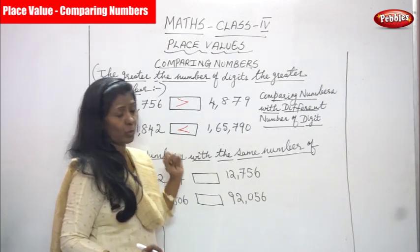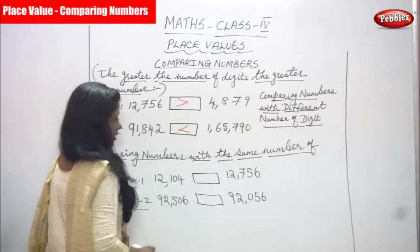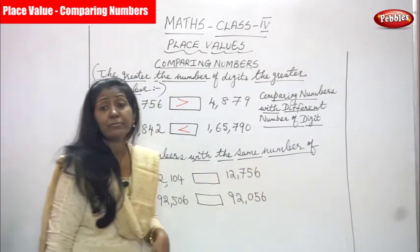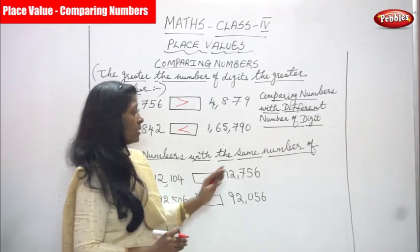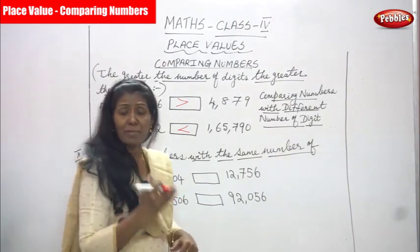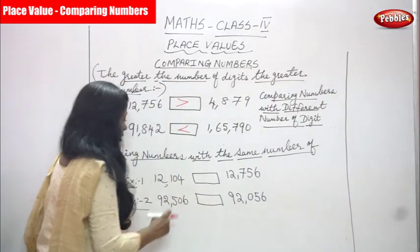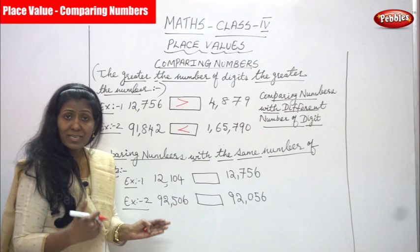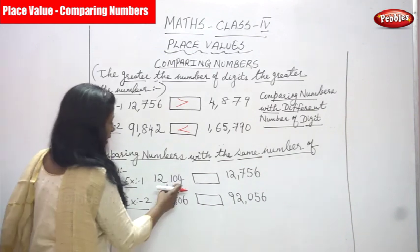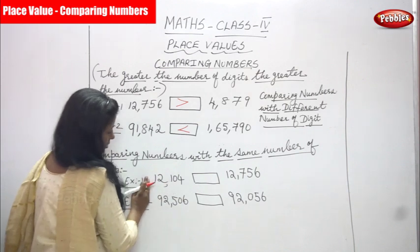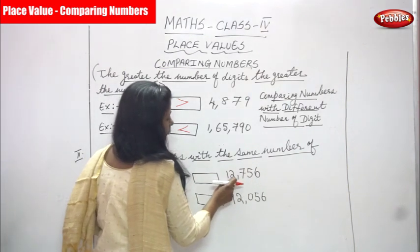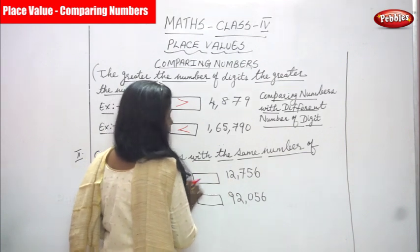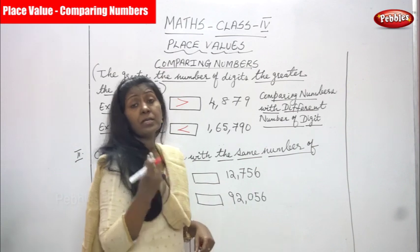That is the answer for this question. Next, comparing numbers with the same number of digits. Look at this: 12,104 and 12,756. Both start with 12. Now we are comparing numbers with the same number of digits. Find out how many digits: one, two, three, four, five on the left side, and again one, two, three, four, five on the right side — it is also five digits.